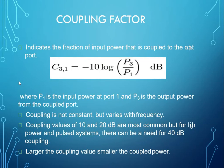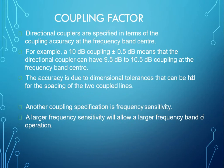It indicates the fraction of input power that is coupled to the output port. It is also the ratio of incident power to the forward power measured in dB. You could see that C31 equals 10 log (P3/P1). Coupling is not a constant, it varies with frequency. As the frequency increases, the coupling factor also increases. The coupling factor is specified in terms of coupling accuracy, and the accuracy is high whenever the frequency is high and is also frequency sensitive. Larger frequency sensitivity will allow a larger frequency band of operation.